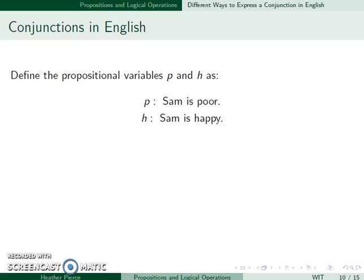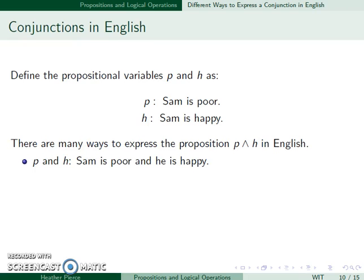So let's talk about some conjunctions in English. We'll define P as Sam is poor, and H as Sam is happy. There's lots of ways to express this conjunction in English. The first, P and H: Sam is poor, and he is happy.